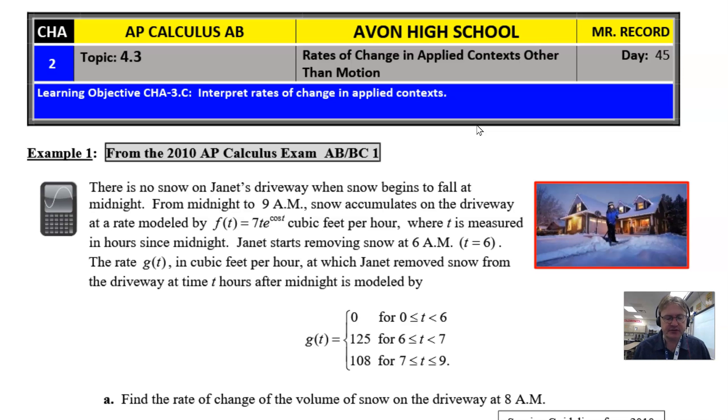It starts by saying that there is no snow on Janet's driveway when snow begins to fall at midnight. From midnight to 9 a.m., snow accumulates on the driveway at a rate modeled by f(t) equals 7t times e to the cosine of t cubic feet per hour, where t is measured in hours since midnight. Janet starts removing snow at 6 a.m. when time is 6. The rate g(t) in cubic feet per hour at which Janet removed snow from the driveway at time t hours after midnight is modeled by this three-piece piecewise function that each piece has a constant rate at which she's shoveling snow.